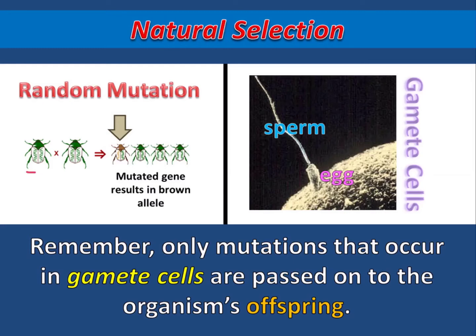Notice in this example that neither parent has a gene that makes them brown, but that gene appears in one of the offspring. That's because the mutation that created that allele occurred in one of the gamete cells that went on to produce that offspring.